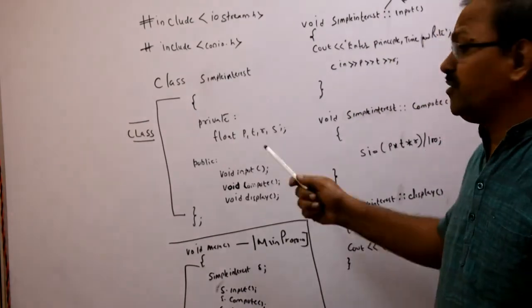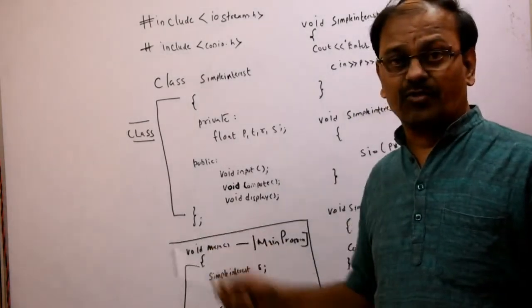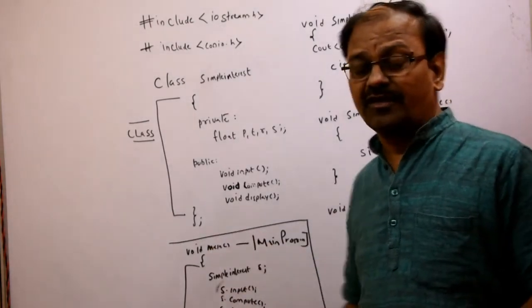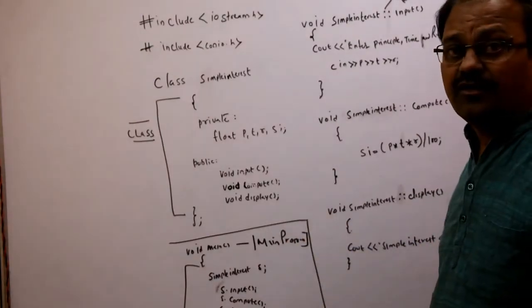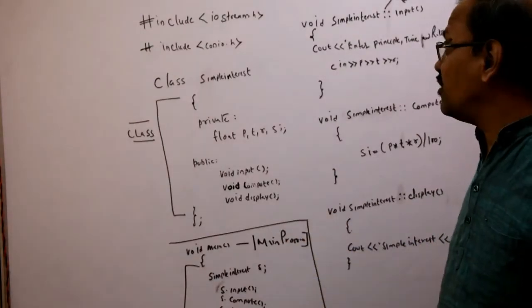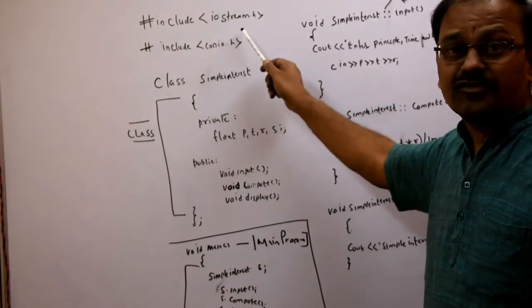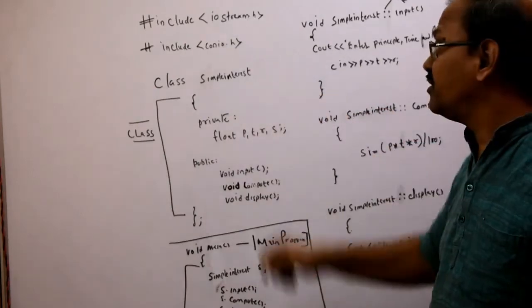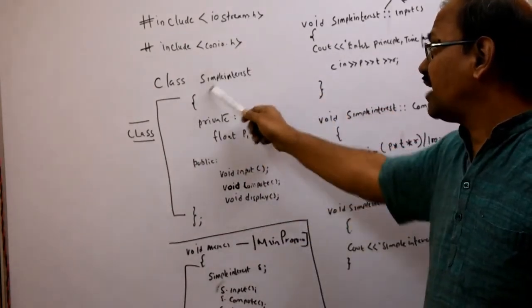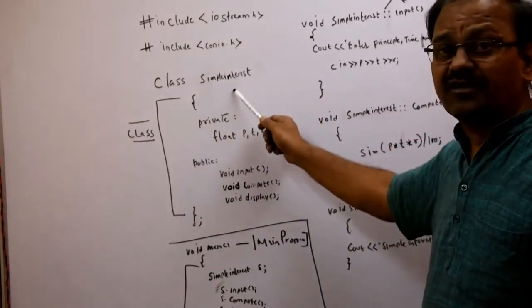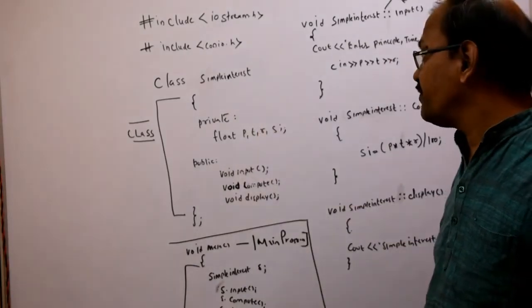Welcome to the second TUC lab program, that is to calculate the simple interest using classes and objects. We have hash include iostream.h, hash include conio.h. The class name is simple interest.